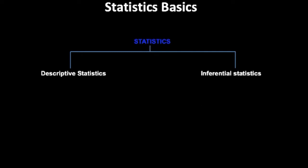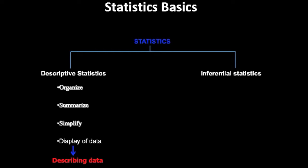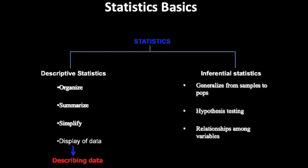Statistics can be divided into two parts: descriptive statistics and inferential statistics. Descriptive statistics organize, summarize, simplify, and display data — they describe the data. Inferential statistics generalize from samples to populations, involves hypothesis testing and relationships among variables — it is about making predictions. I am going to discuss these two methods in my future videos.